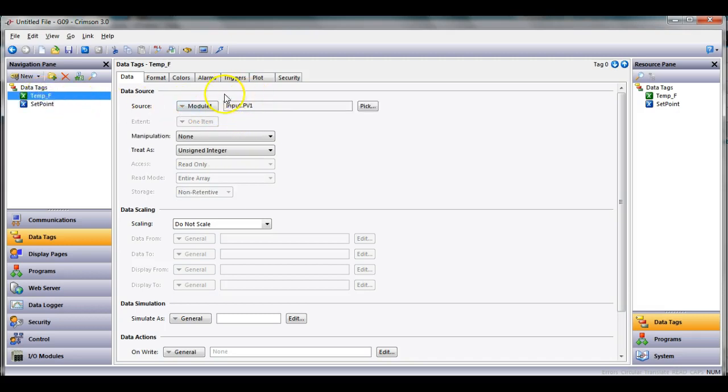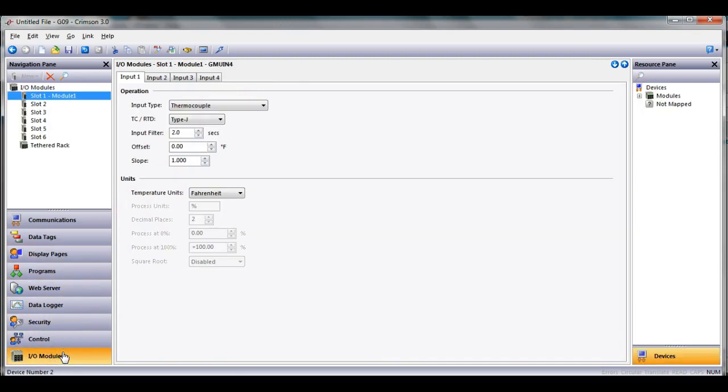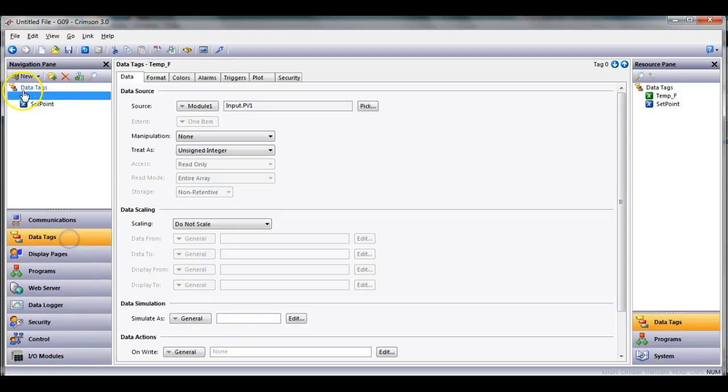The temp F that you see here is from many of my classes where we take a type J thermocouple input from an input module on the back of the HMI. What I'd like to do is take the setpoint, make it a retentive value, and I want it to get its min and max values from temp F.